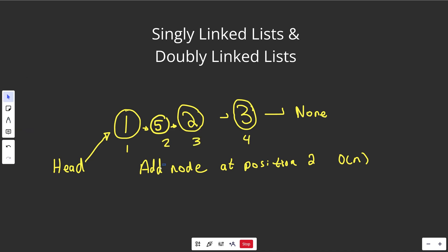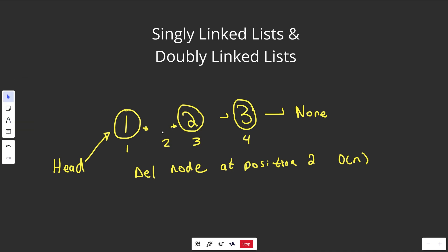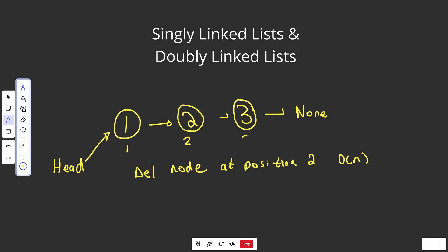Similarly, if you wanted to delete a node at position 2, you'd have to start at the beginning, go through until you get to that position, and basically just remove it — which involves pointing the previous node over to the next one. That's again going to be an O(N) operation, because you start at the beginning and go up until that position.